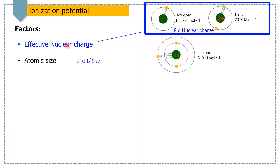The second factor is atomic size. Ionization potential is inversely proportional to atomic size, meaning that when the atomic radius increases, the ionization potential decreases. This is because when the distance between the nucleus and the outer shell electron increases, the electrostatic force between them decreases.